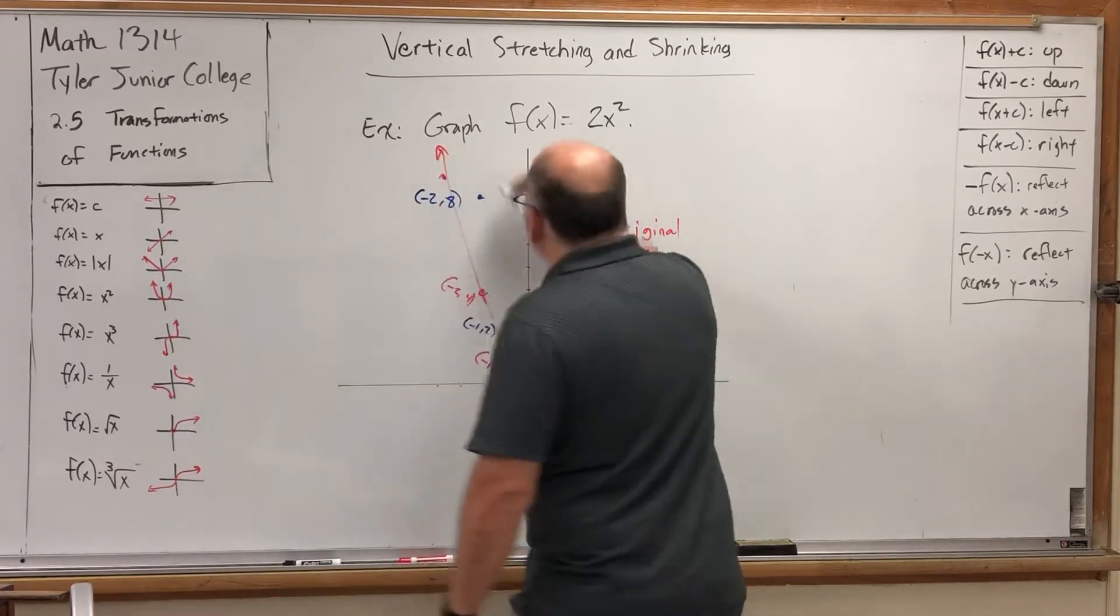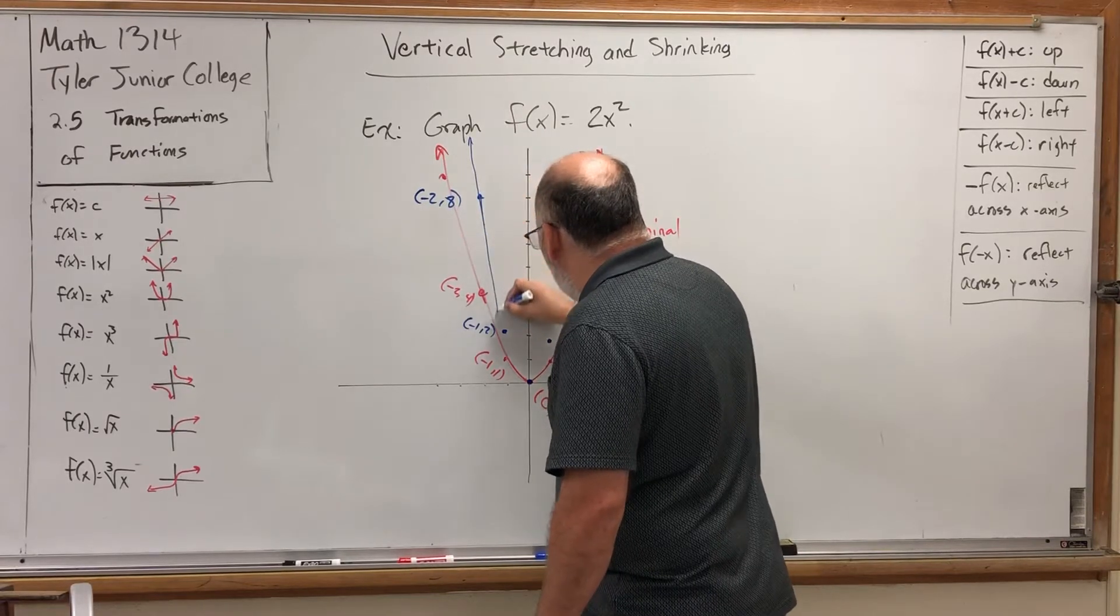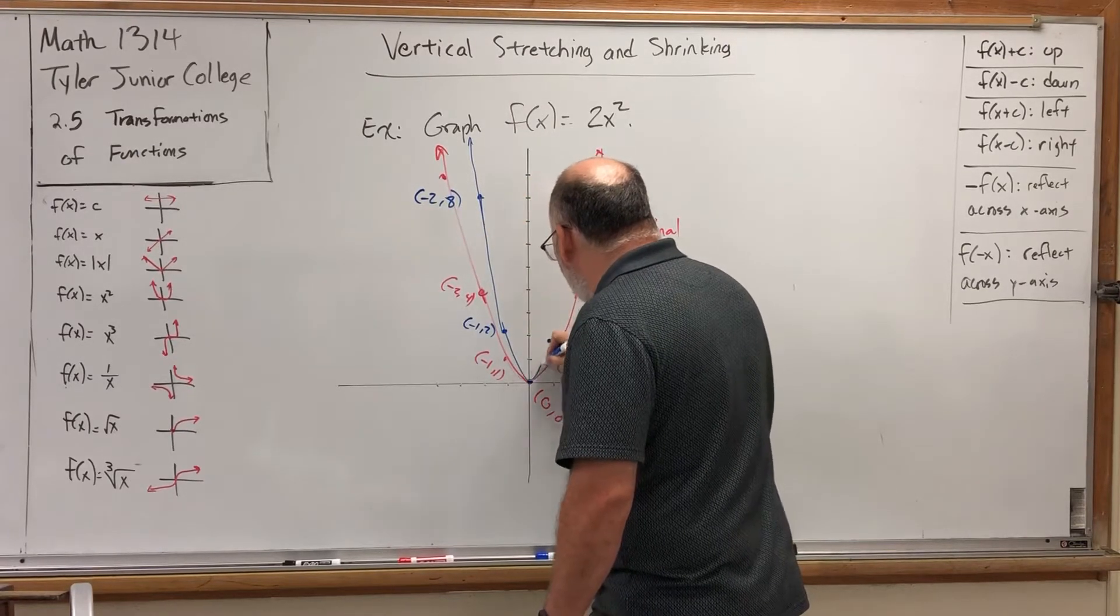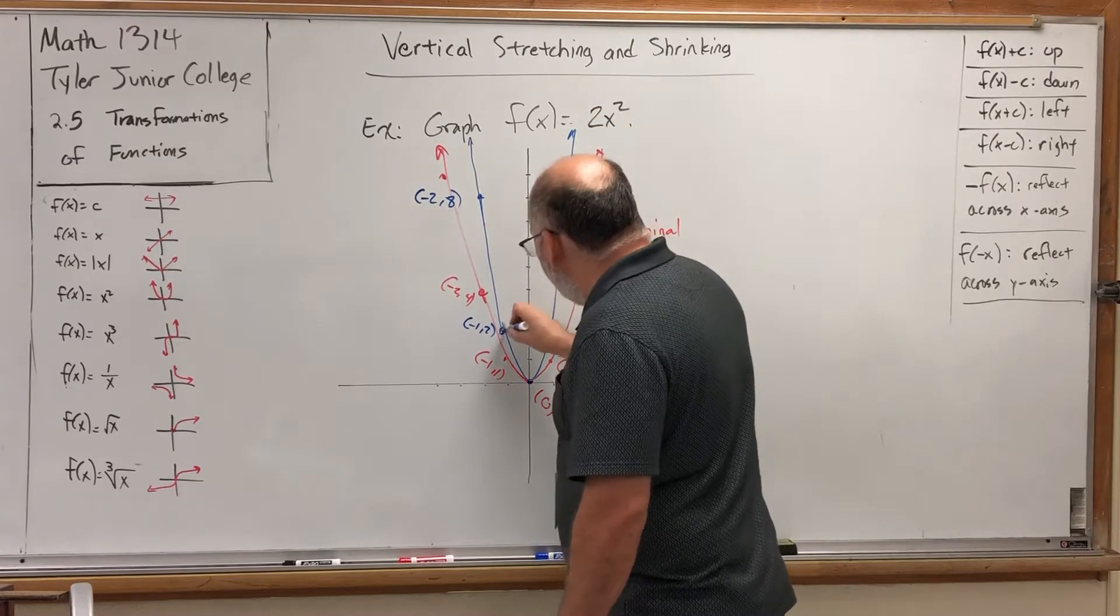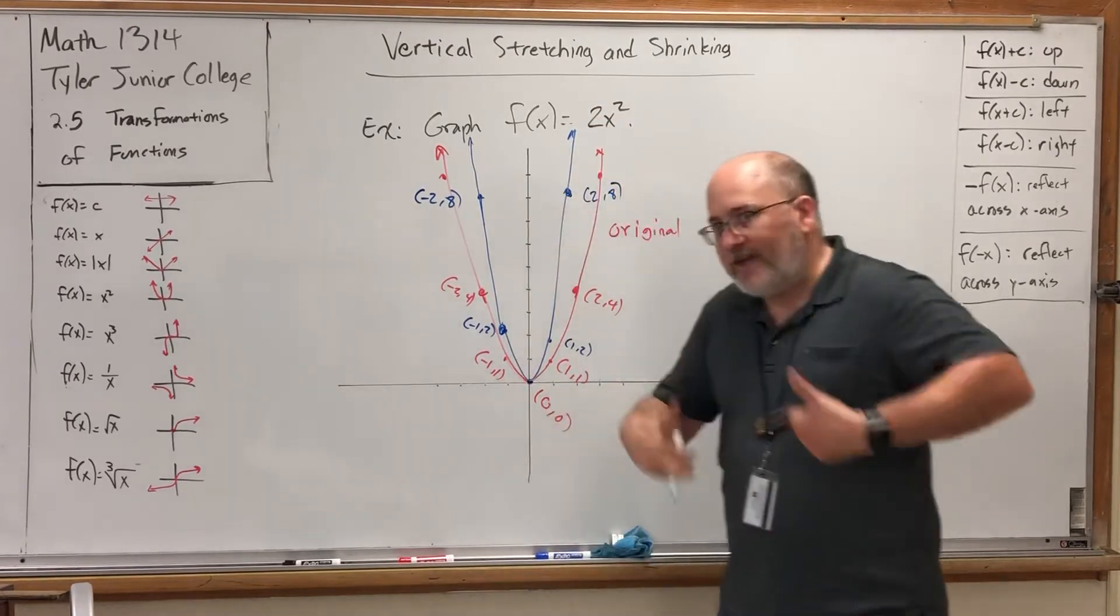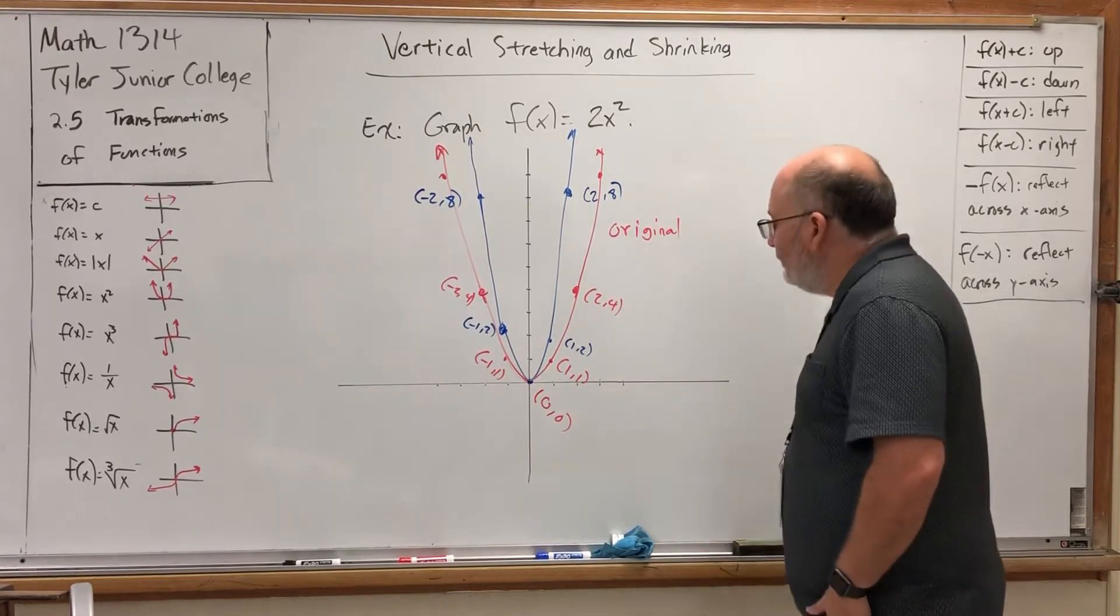And if we reconnect them, we get a lot of skinnier parabola. It's skinnier because the points are going up faster because of the 2 that's getting multiplied before saying, I'm your y coordinate.